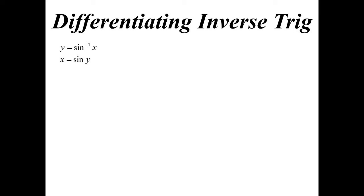So instead of finding dy/dx, I'll find dx/dy. Therefore, my derivative is 1 over the cosine of y. Now that is the derivative, it's just in terms of y. That's fine, but it's probably going to be more convenient to be in terms of x.